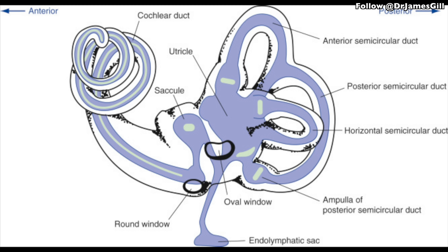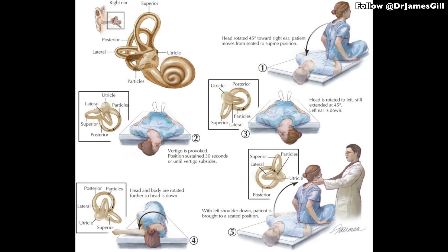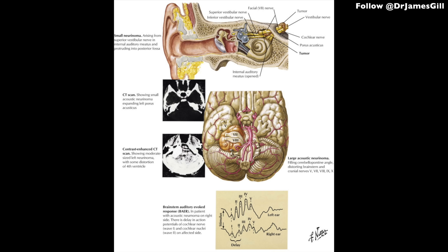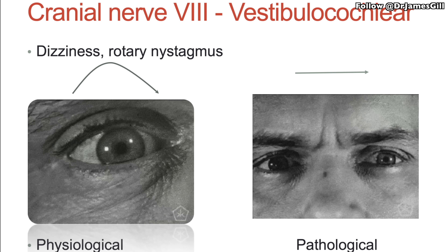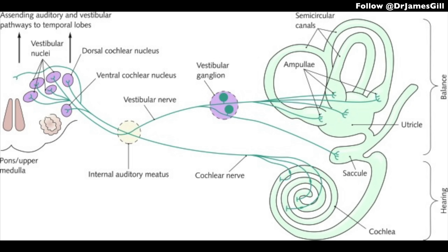It is arguable that cranial nerve 8 is one of the most important cranial nerves. The vestibulocochlear nerve is vital for hearing and also balance. Problems with cranial nerve 8 may cause hearing loss or straightforward deafness, nystagmus, and most troublingly for patients, vertigo.